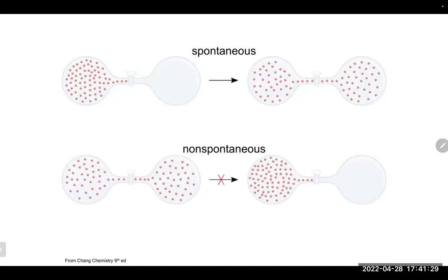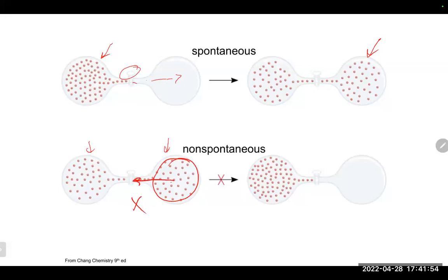If we had gas molecules separated by a valve and opened the valve, spontaneously those gas molecules are going to escape to the other side and start to fill it. But the opposite situation — if we started with gas on both sides — they really won't spontaneously all decide to go just one way. You can maybe help it along by heating it, but they're not going to spontaneously head to the other side by themselves.